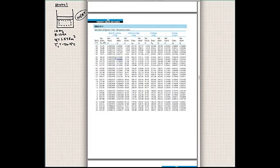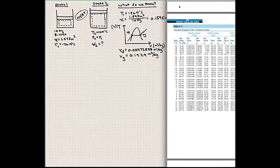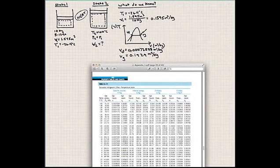I'm going to interpolate to see what the specific volume is at a temperature of minus 26.4. If I interpolate between these two, you'll find that VF at 26.4 degrees Celsius is 0.00072588 meters cubed per kilogram and VG is 0.1929 meters cubed per kilogram. A quick check when we interpolate is to know that it has to be in between these two values. This is after interpolating at a temperature equal to minus 26.4 degrees Celsius.